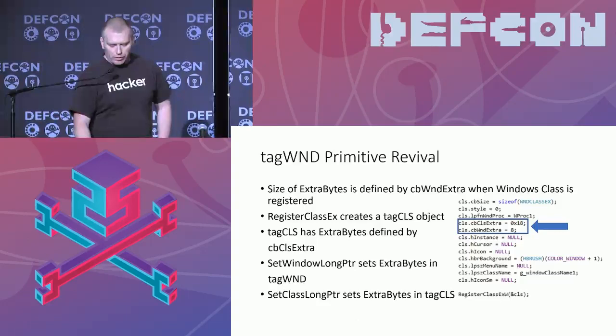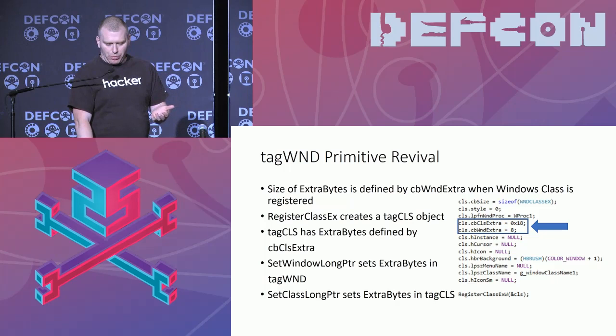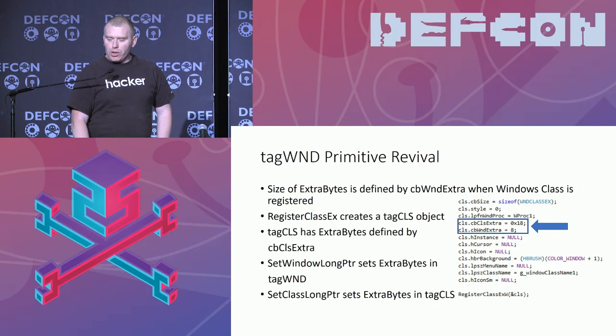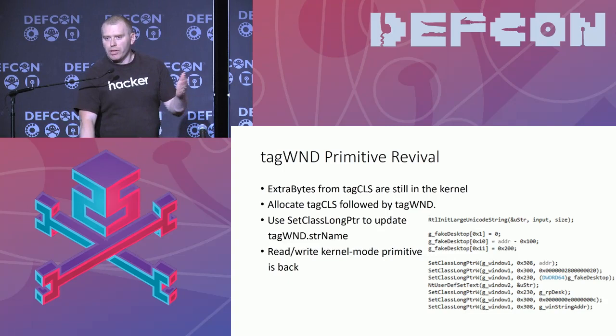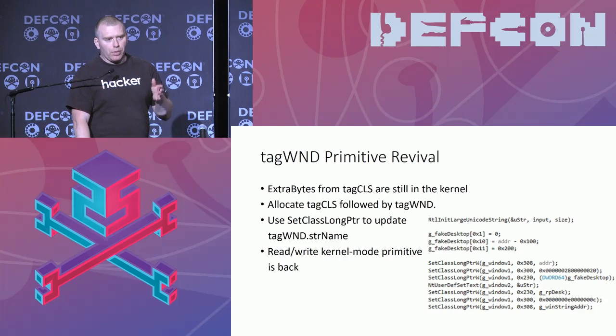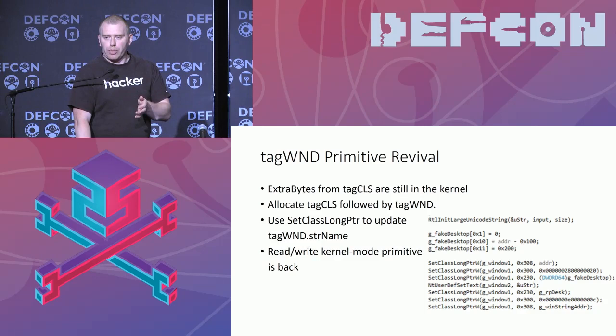There was a different problem: even though we knew the address and we overwrote the size of extra bytes, we couldn't use it anymore because we're just writing to user-mode memory. Looking at how that works, we find that the size of extra bytes is actually defined when we register the window class. But when we register the window class, we also set a parameter for an object called wndcls, which also has extra bytes. And even better, it has an API to set these extra bytes — it's called SetClassLongPointer. And lo and behold, even though Microsoft tried to mitigate it, they only changed one of the APIs, not the second one. So the extra bytes from a wndcls object are still placed in the kernel, which means we can allocate a wndcls object before the window object, use extra bytes from the wndcls object to write the string name pointer of the window object, and this way we have our read-write primitive back again.